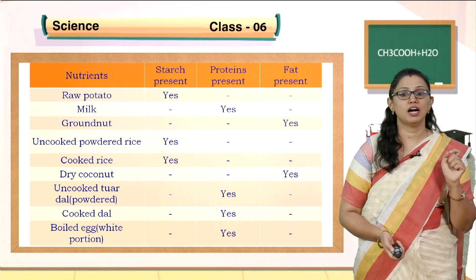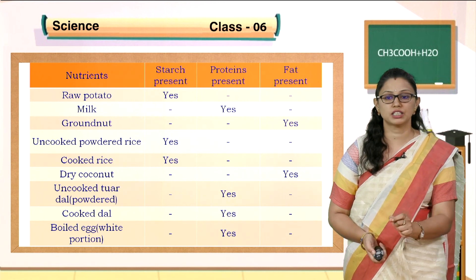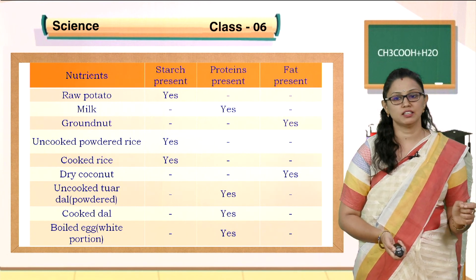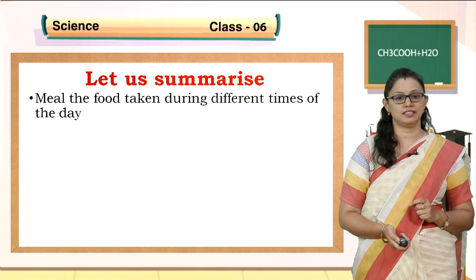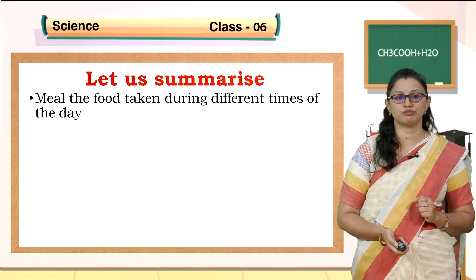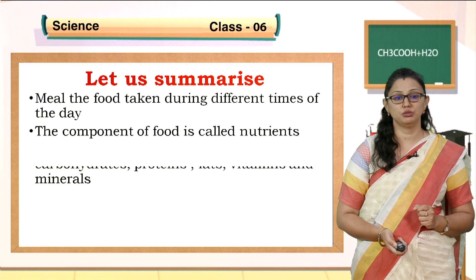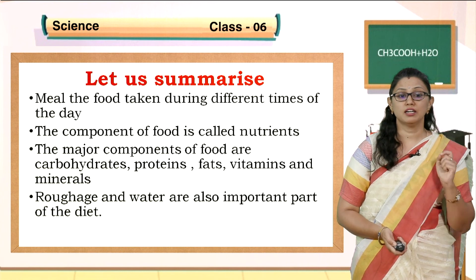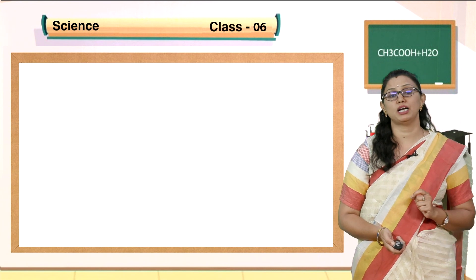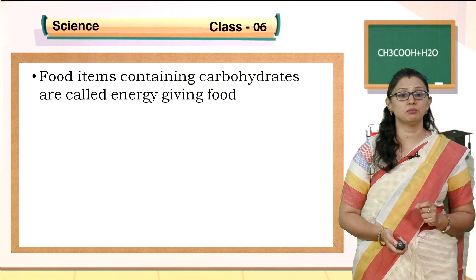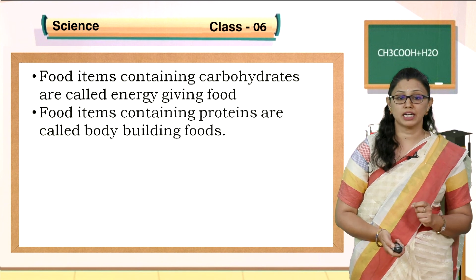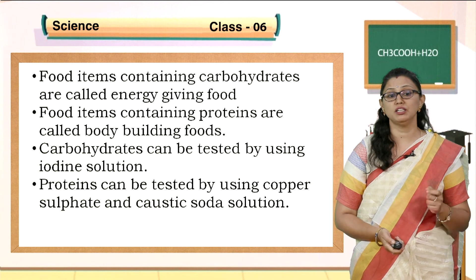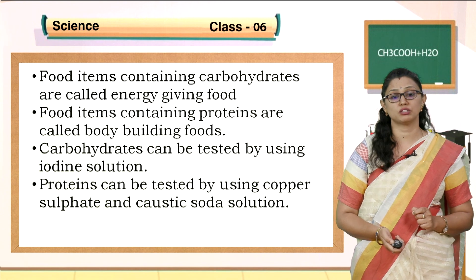Remember: a blue-black color indicates the presence of starch; a violet color indicates the presence of proteins; and oily patches on the sheet indicate the presence of fats. Let us summarize this session. A meal is the food taken during different times of the day. The components of food are called nutrients. The major components of food are carbohydrates, proteins, fats, vitamins and minerals. In addition, roughage, dietary fibers and water are also important parts of our diet. Food items containing carbohydrates are called energy-giving food; food items containing proteins are called body-building foods. Carbohydrates can be tested using iodine solution; proteins can be tested using copper sulfate and caustic soda solution.